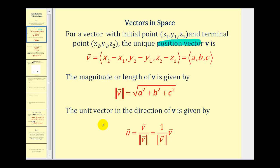In order to find a unit vector in the direction of vector V in space, we divide the original vector V by the magnitude, or multiply the vector by 1 over the magnitude. That results in a vector with the same direction that has a length or magnitude of 1.